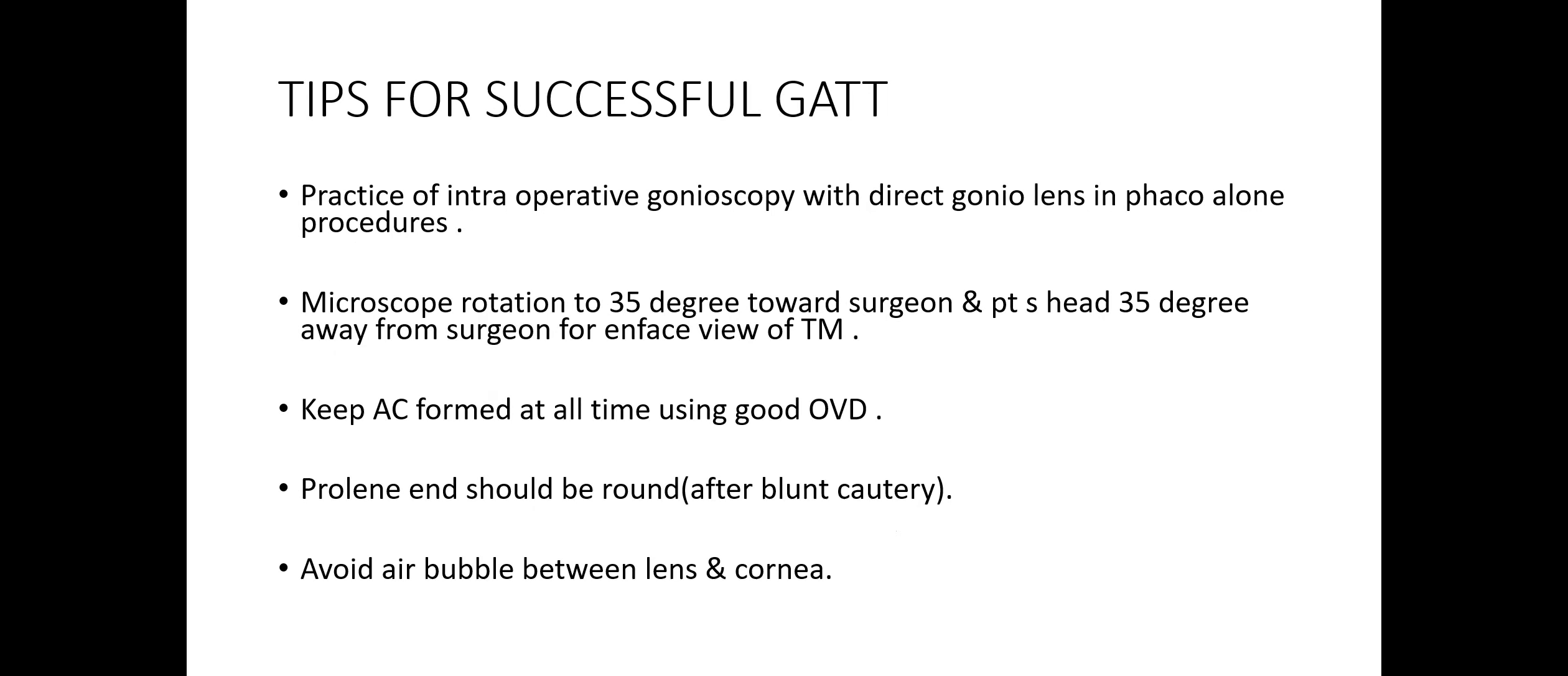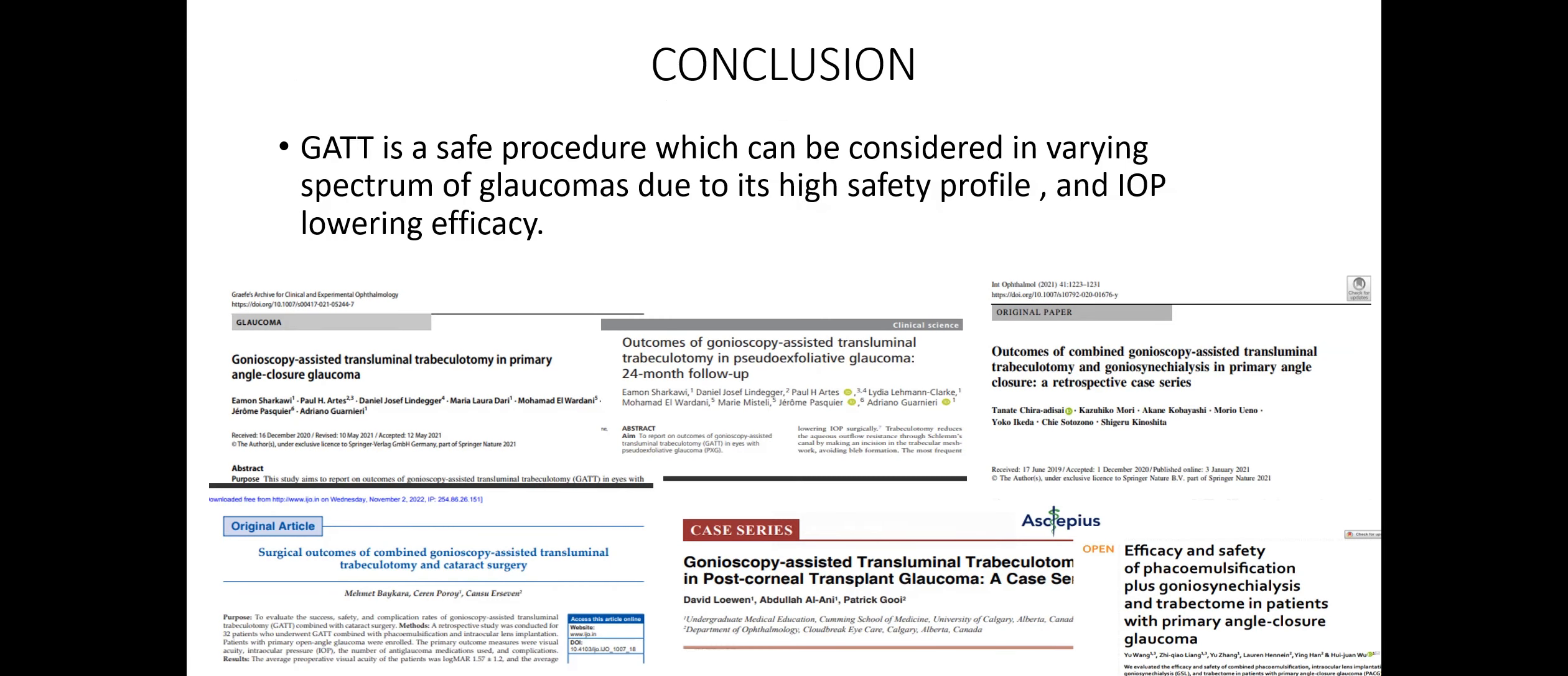For a successful GATT, the practice of intraoperative gonioscopy with direct gonio lens in phaco procedure should be started first. Rotate the microscope 35 degrees toward the surgeon and the patient's head 35 degrees away from the surgeon for an enhanced view of the trabecular meshwork. Keep the anterior chamber formed at all times using good viscoelastic. The prolene end of the suture should be blunted with cautery and avoid any air bubble between the lens and the cornea.